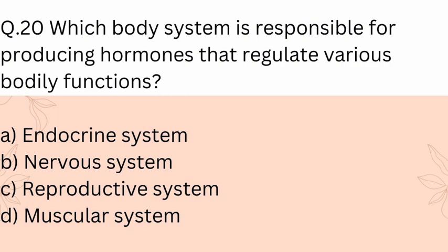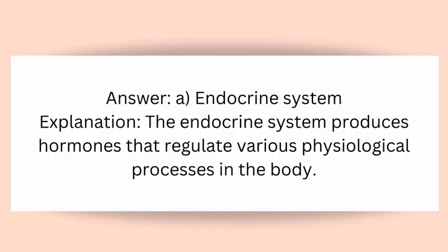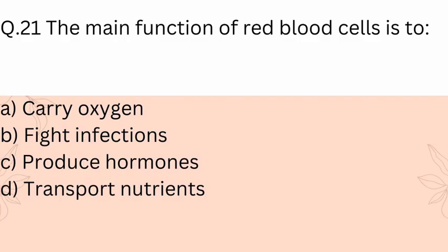Question 20: Which body system is responsible for producing hormones that regulate various bodily functions? A) Endocrine system, B) Nervous system, C) Reproductive system, D) Muscular system. Answer: A) Endocrine system. Explanation: The endocrine system produces hormones that regulate various physiological processes in the body.